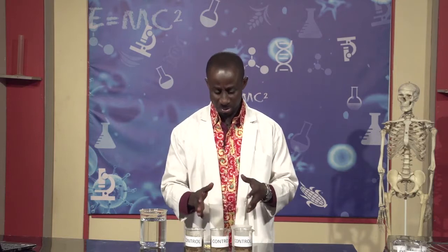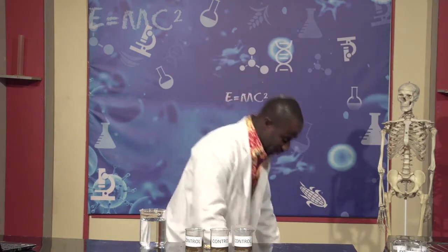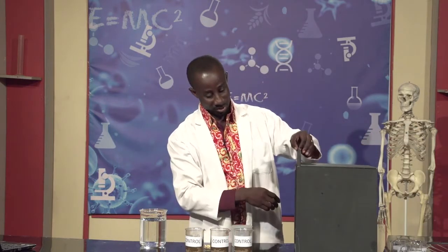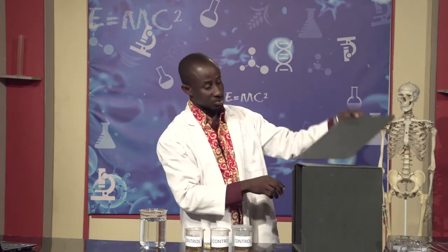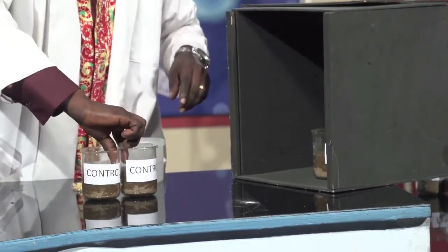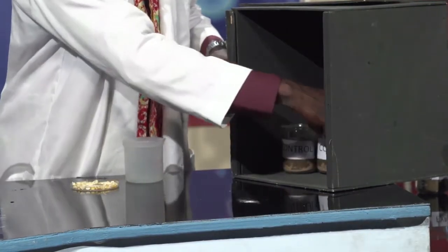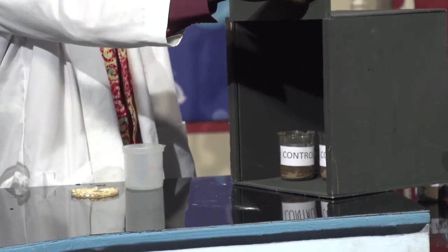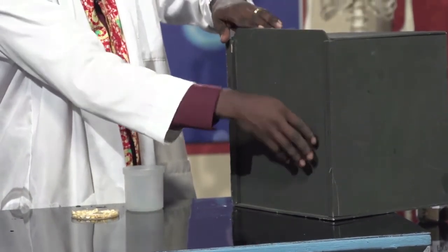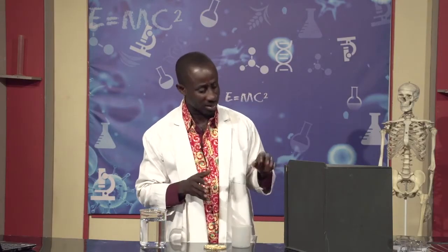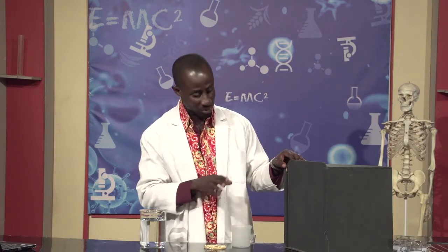Now for the first set, which is the control, we're supposed to keep them in a dark room. So let me get my dark room. I have with me this specially created dark room. In place of this kind of setup, you can choose to use a dark cupboard at home, a dark place maybe under your bed, or any place where light will be a limiting factor — where light wouldn't be available for your setup.